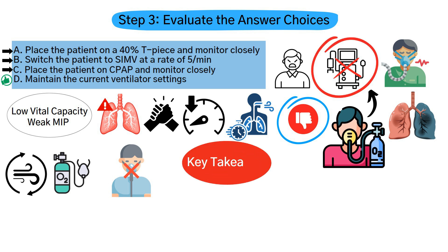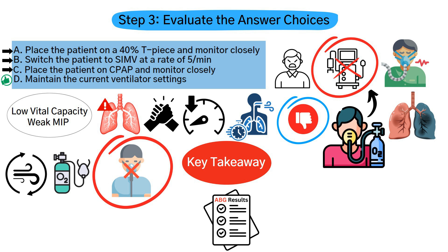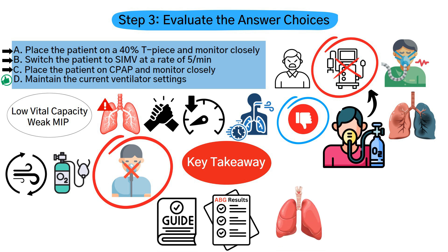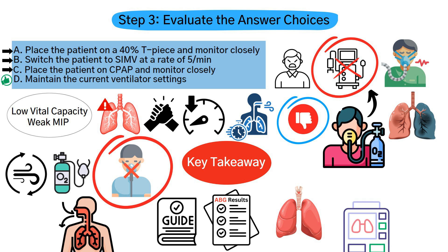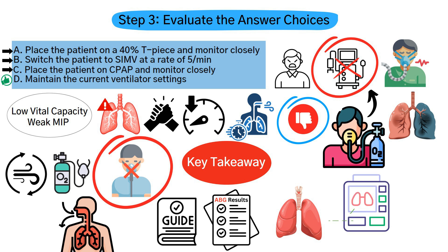The key takeaway for this question is this: even though the ABG values appear normal, weaning decisions must also be guided by bedside measurements of respiratory effort and muscle strength. In this case, the patient is not ready for spontaneous breathing, and maintaining current ventilator support is the safest course of action. By breaking down the question step by step, we can determine that the correct answer is D — maintain the current ventilator settings.